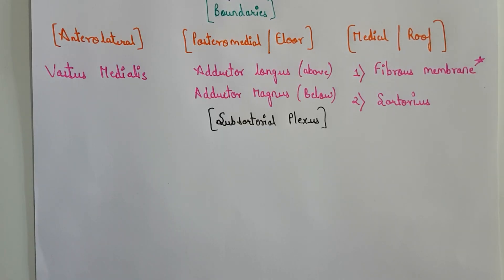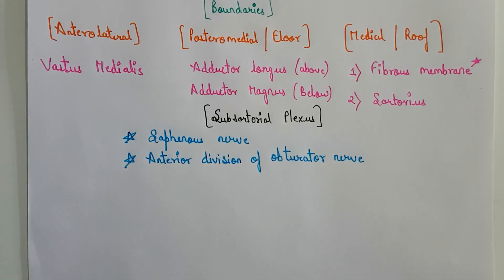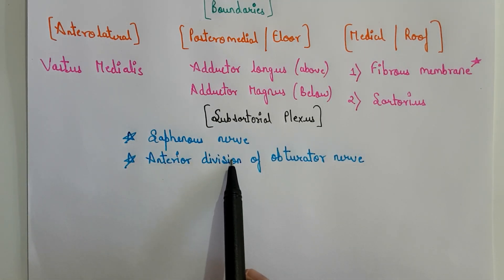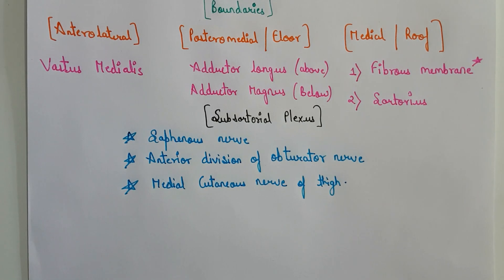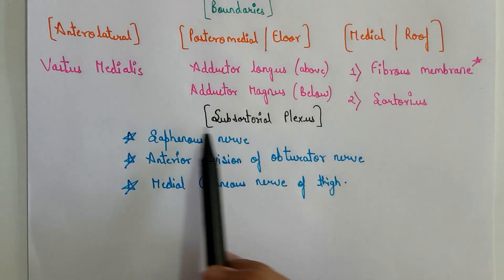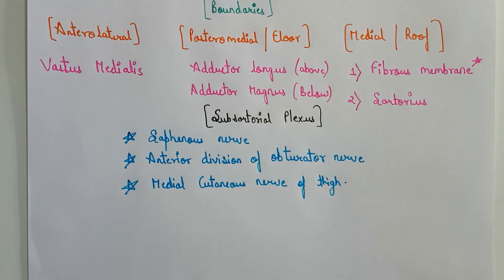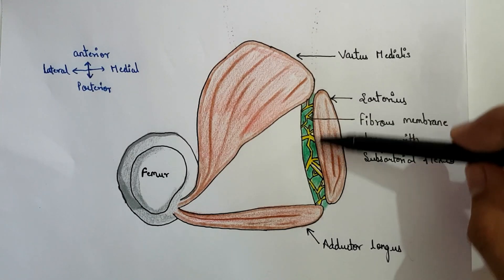The subsartorial plexus is a network of nerve fibers made up of branches of three nerves: the branches of the saphenous nerve, the branches of the anterior division of the obturator nerve, and the branches of the medial cutaneous nerve of the thigh. All the branches of these three nerves form the subsartorial plexus, which is embedded in the fibrous membrane.